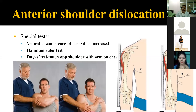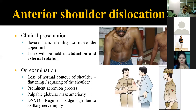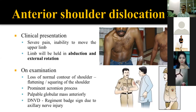On palpation, you will sometimes find a globular hard mass in the anterior part of the shoulder joint where the head has displaced. If you do rotation of the limb, there may be some transmitted movement felt at that mass, which is abnormal. This confirms the head is lying anteriorly, displaced from the shoulder joint.